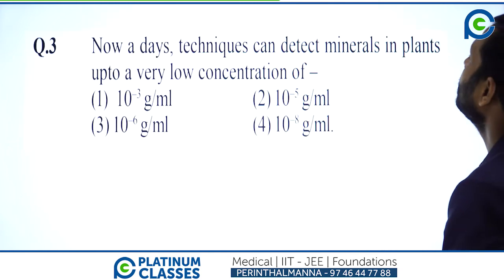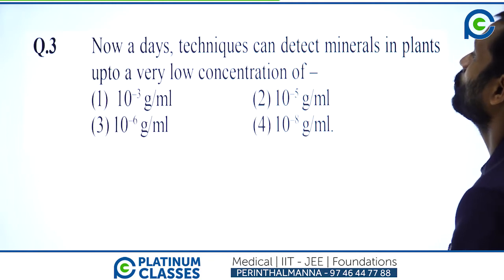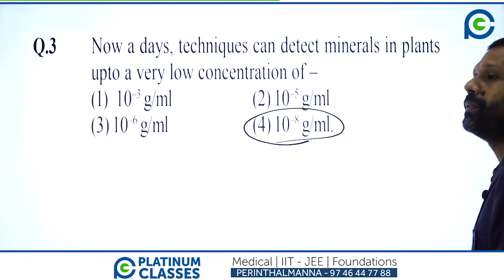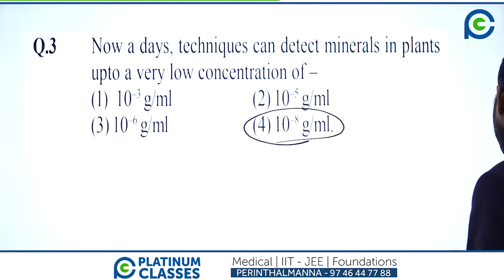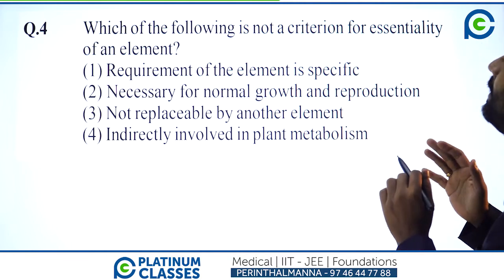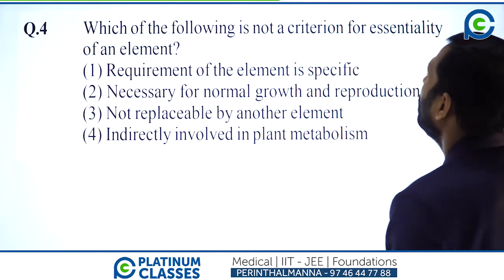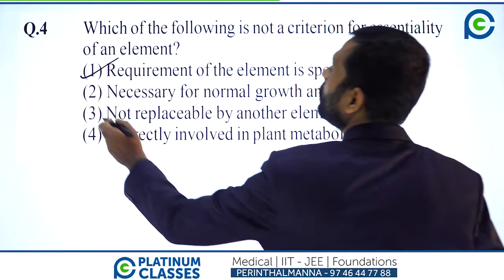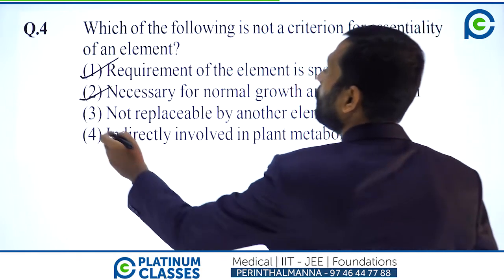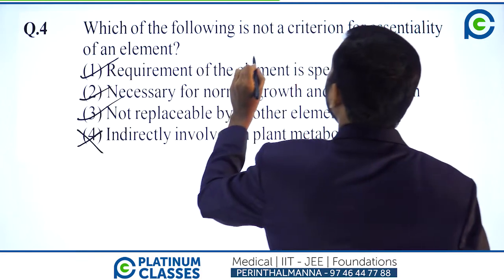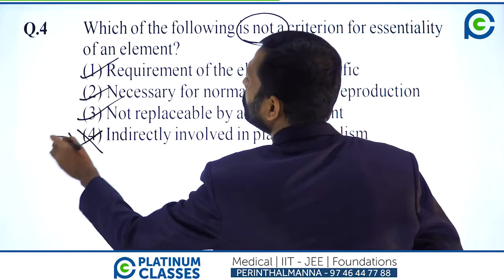Nowadays, techniques can detect minerals in plants up to a very low concentration of 10 to the power of minus 8 grams per ml. Which of the following is NOT a criterion for the essentiality of an element? The criteria for essentiality are: requirement of the element is specific; necessary for normal growth and reproduction; not replaceable by another element. Option 4 — indirectly involved in plant metabolism — is NOT a criterion. Answer: option 4.